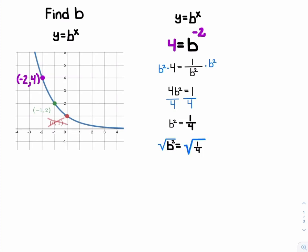The square root of a fraction is the same thing as the square root of the numerator over the square root of the denominator. We end up getting b = 1/2.